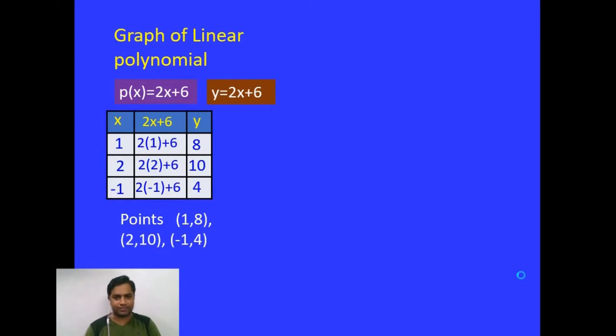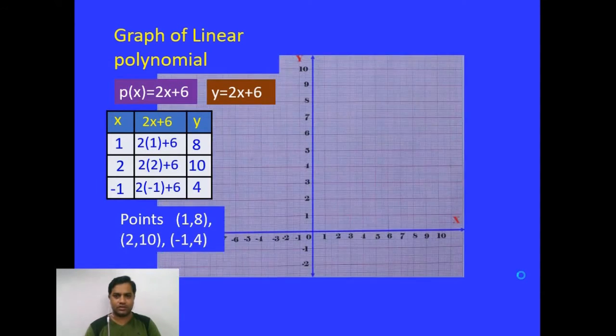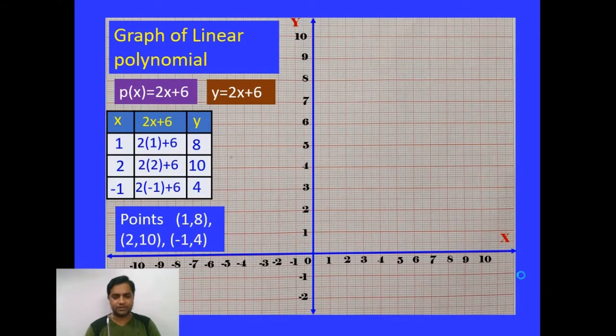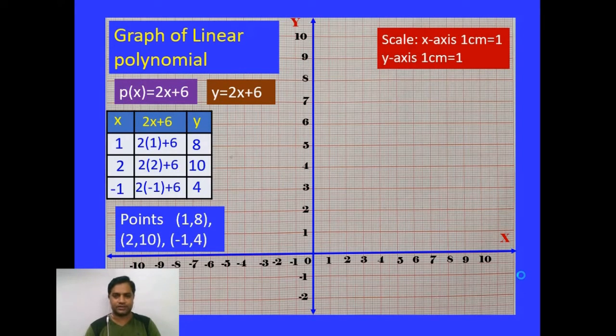Let us take one graph paper. Now I have taken here one graph paper. In this graph paper, one horizontal line which is called x-axis and one vertical line y-axis. I have taken here each centimeter is 1 unit.